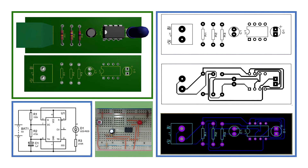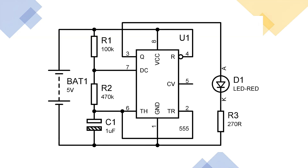Welcome to our new educational video. In this video, you will find everything you need to know about light-emitting diode flasher circuits. Enjoy watching! Light-emitting diode flasher circuits are simple electronic circuits that control light-emitting diodes to blink at specific intervals. These circuits continuously turn the light-emitting diodes on and off using timer and oscillator circuits.